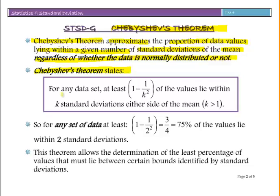Chebyshev's Theorem states for any data set, at least 1 minus 1 over k squared of the values lie within k standard deviations either side of the mean, where k is greater than 1.